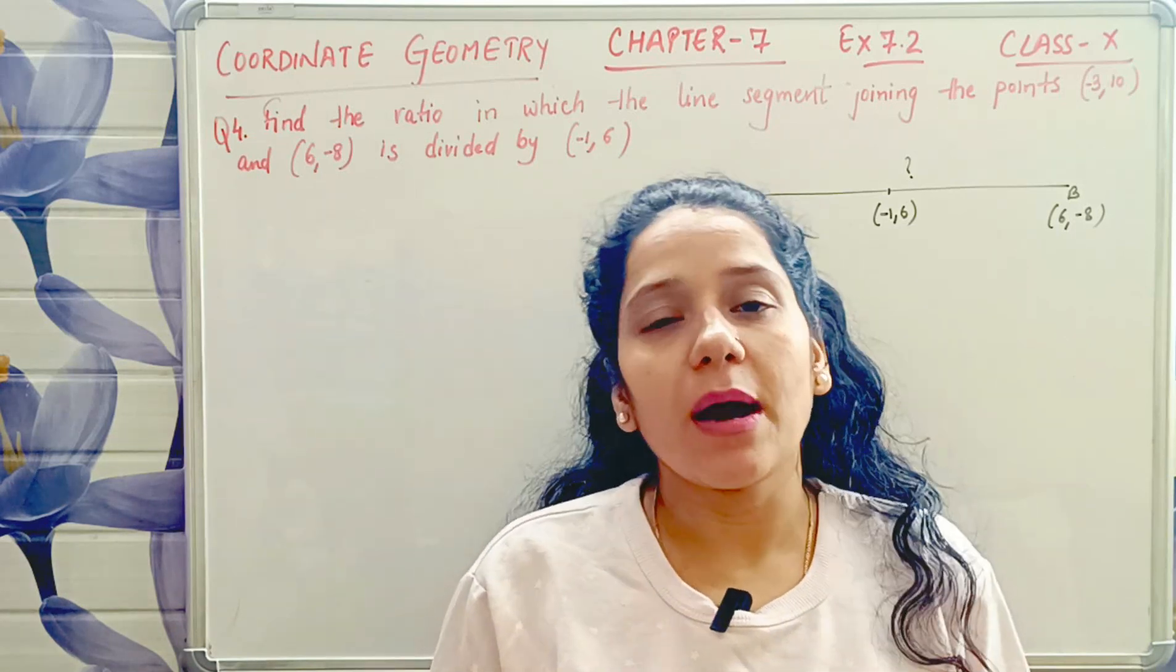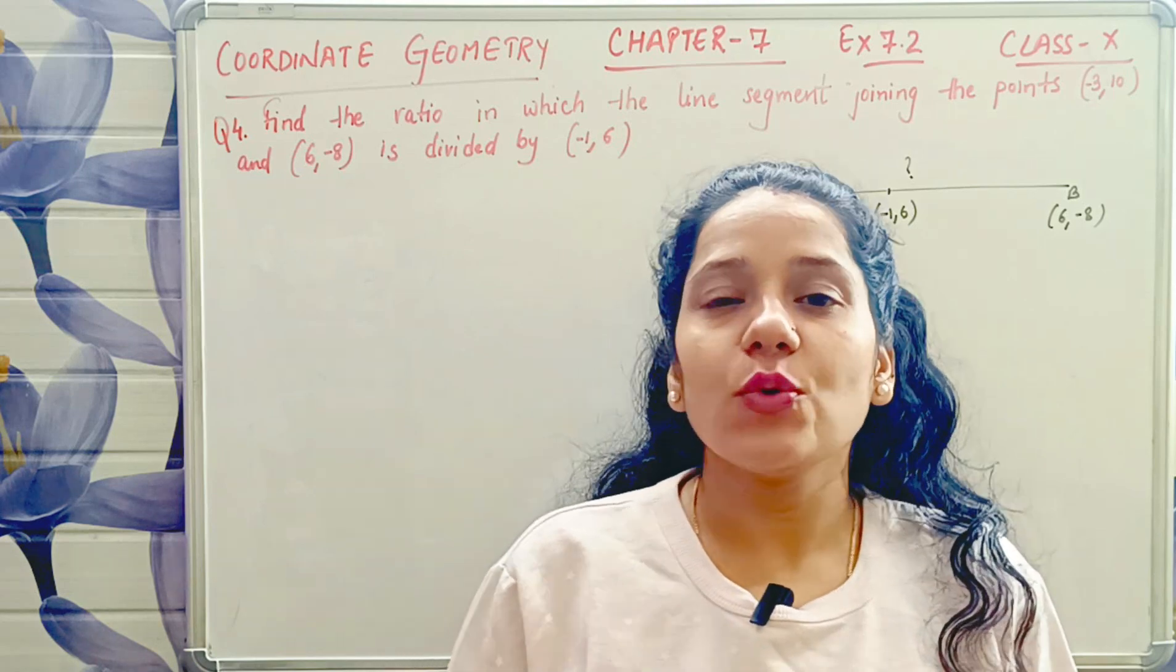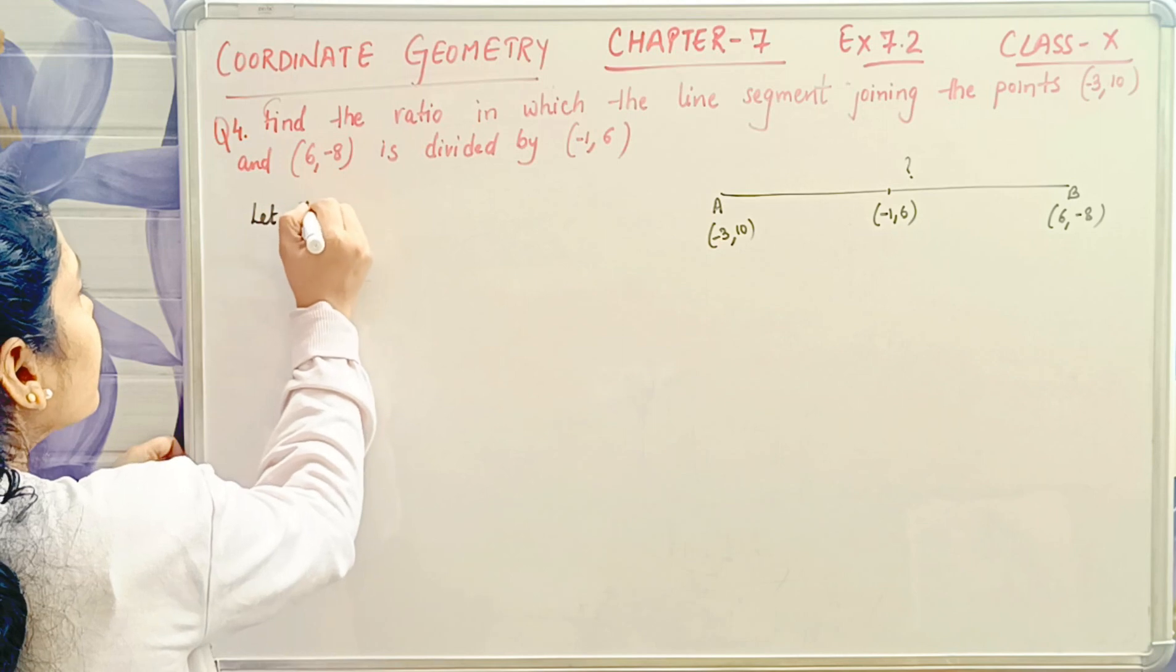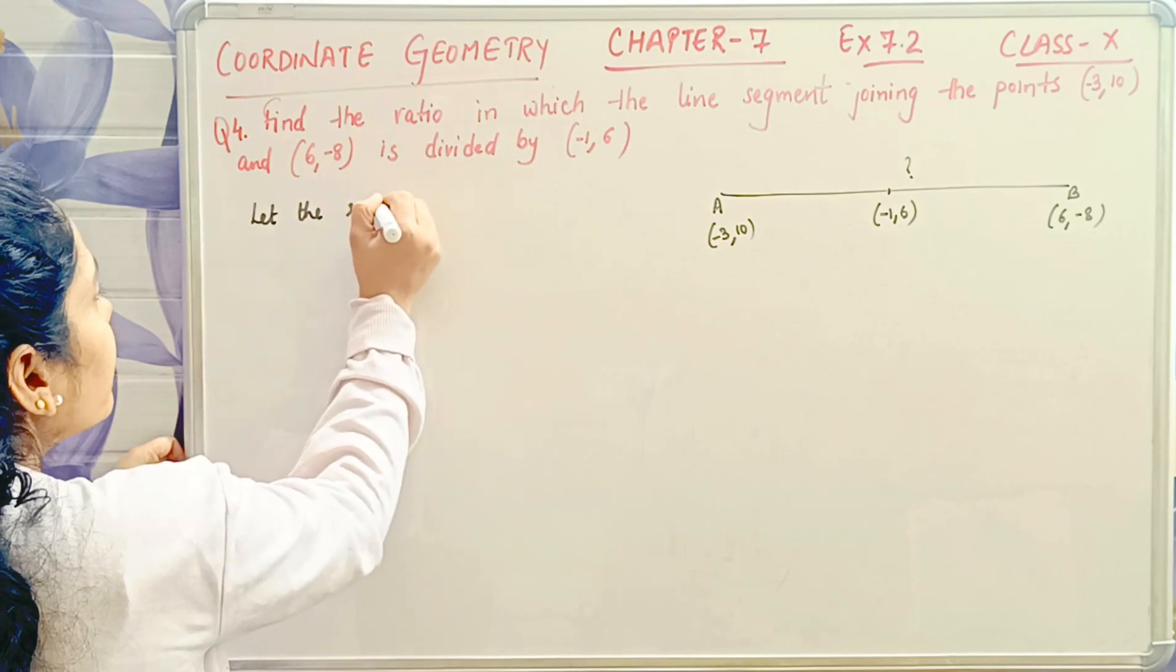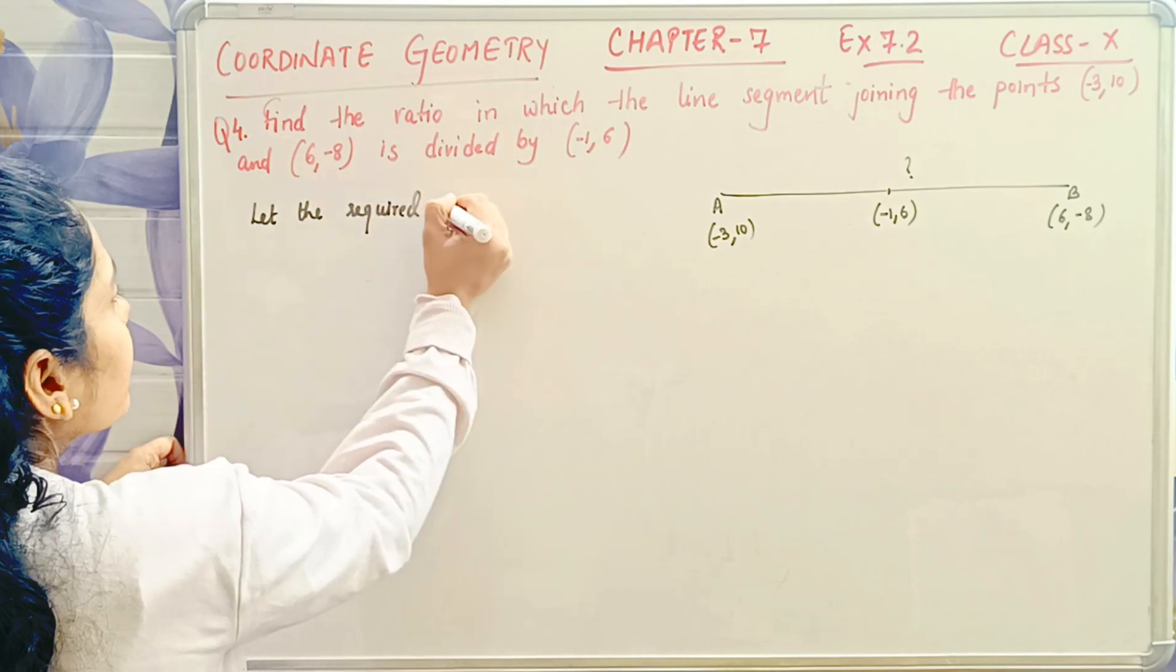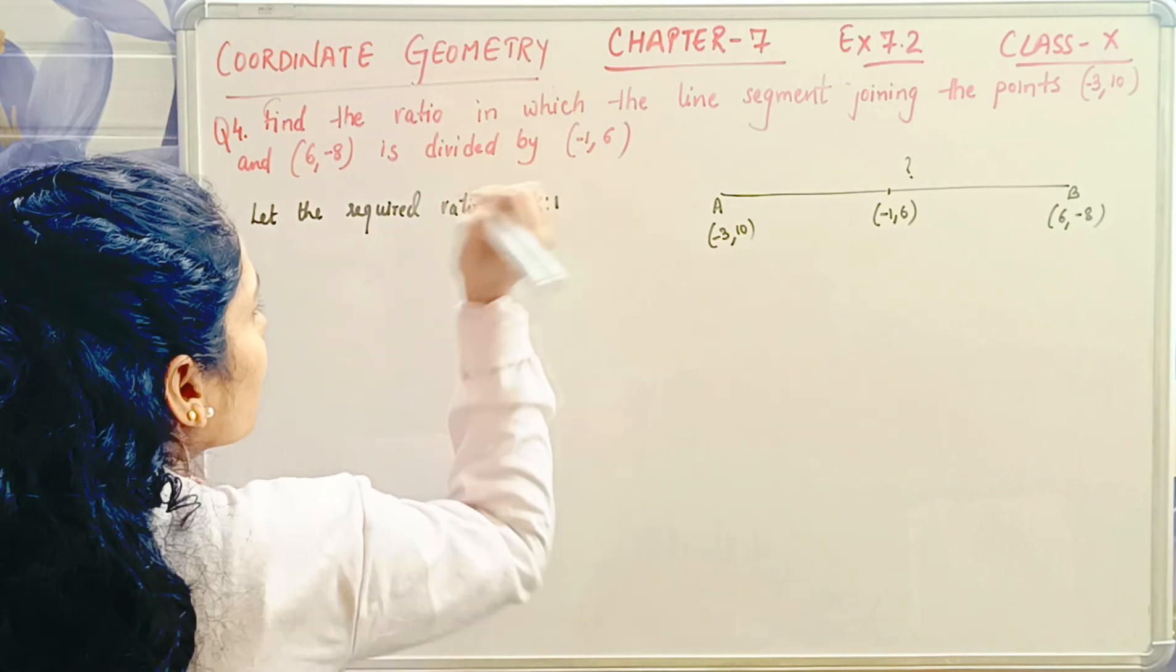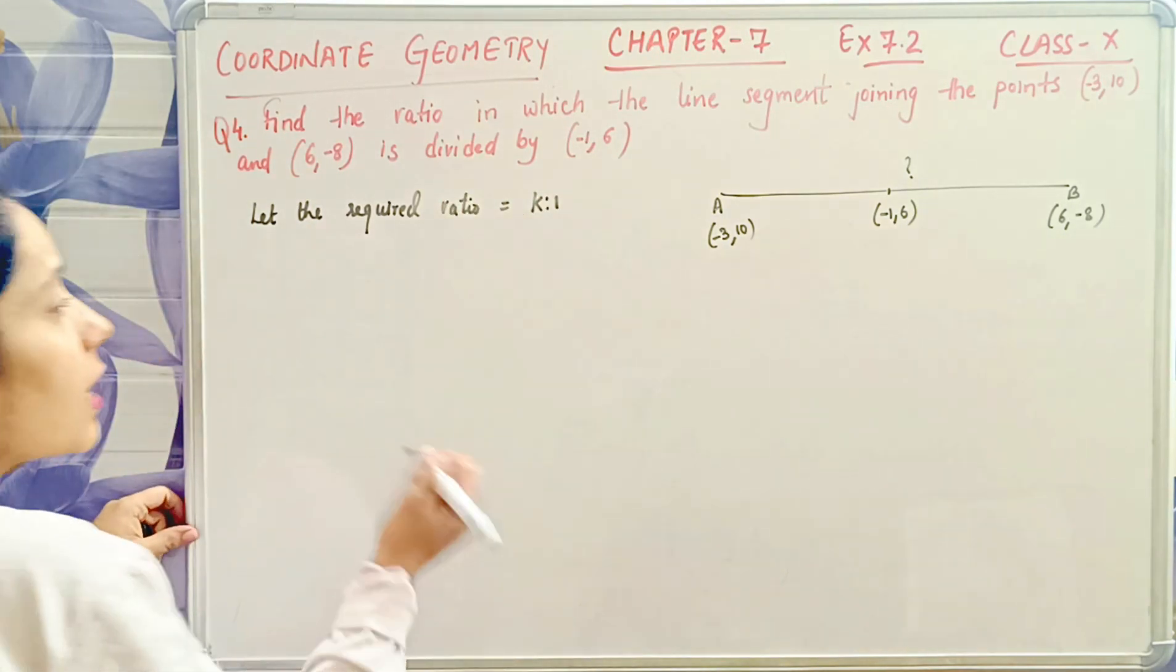Then we take the required ratio as k is to 1. Let the required ratio be k is to 1. Now we will use the section formula.